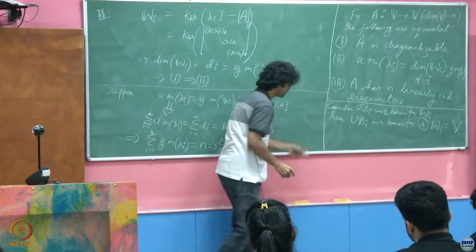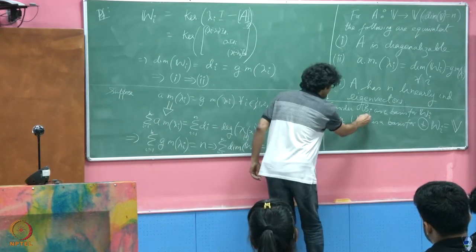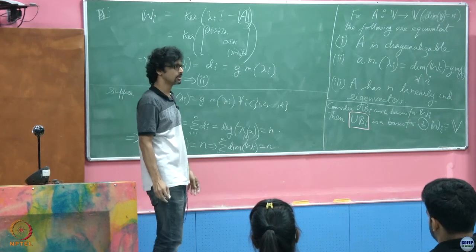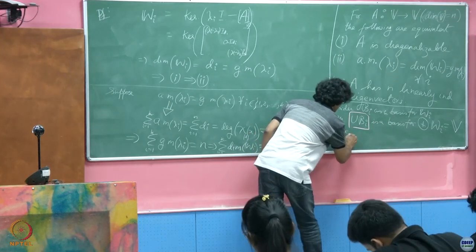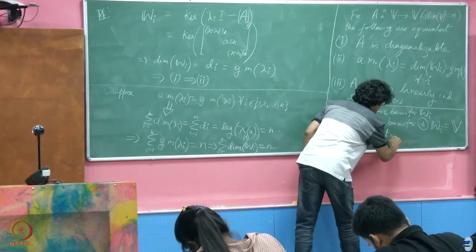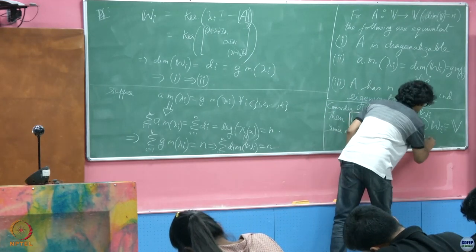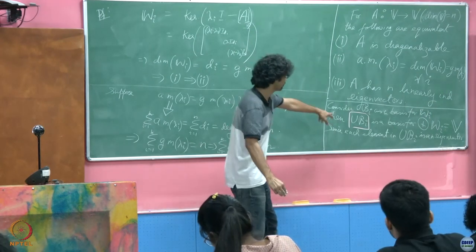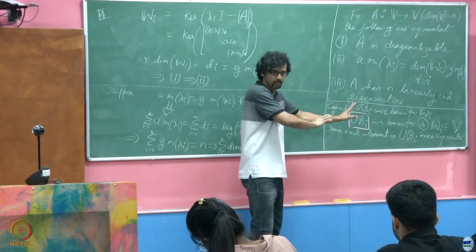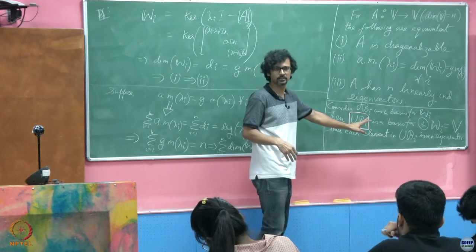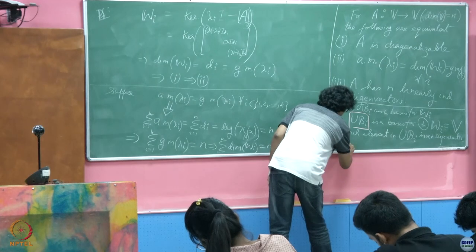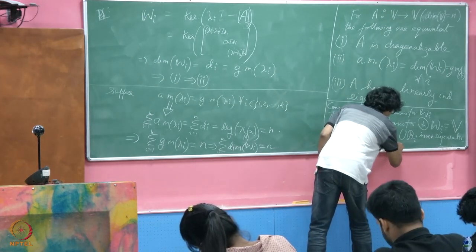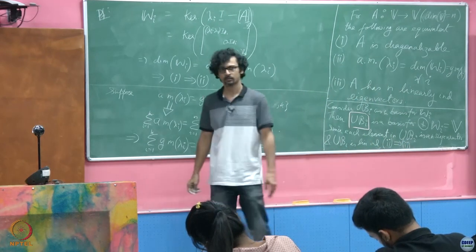Since each element in the union of B_i is an eigenvector, and we know that this union is a linearly independent set by our previous proof, we have a basis of V consisting entirely of eigenvectors. Therefore 2 implies 3.